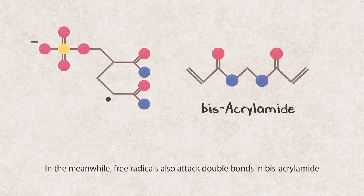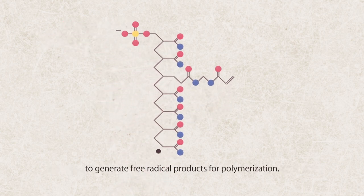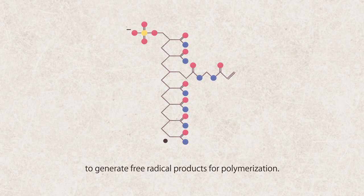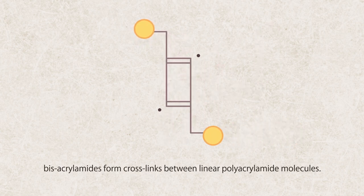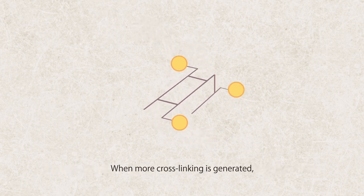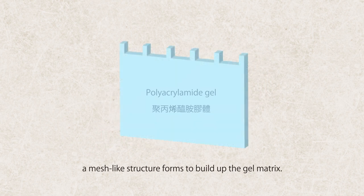In the meanwhile, free radicals also attack double bonds in bisacrylamide to generate free radical products for polymerization. Acting as a bridge, bisacrylamides form cross-links between linear polyacrylamide molecules. When more cross-linking is generated, a mesh-like structure forms to build up the gel matrix.